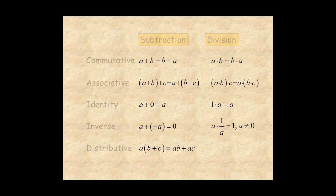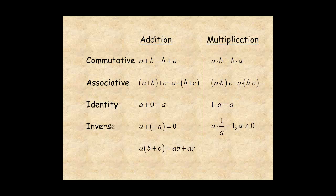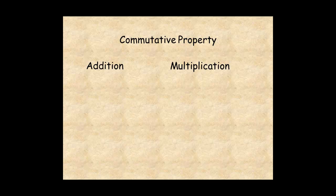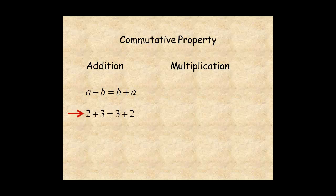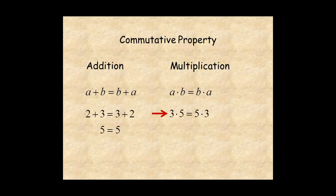Let's look at each of the postulates. For the commutative property of addition, when you add two numbers, the order of the numbers doesn't matter. For example, two plus three equals three plus two equals five. Also, for multiplication, the order doesn't matter. For example, three times five equals five times three equals fifteen.